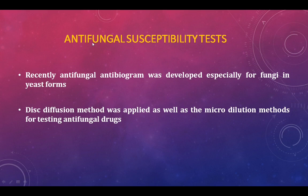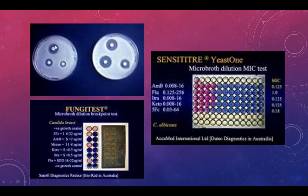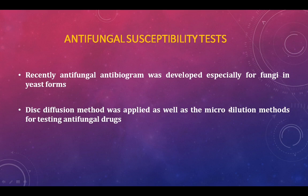Once the organism is identified, antifungal susceptibility testing is performed — similar to antibiotic susceptibility testing for bacteria. Different antifungal drugs are tested using either the disc diffusion method or the microbroth dilution method. In disc diffusion, an antifungal disc is placed on the growing fungus and the zone of inhibition is measured to determine susceptibility.